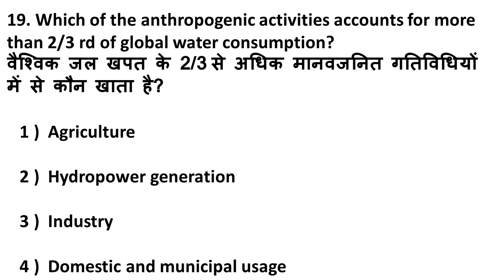Next question: which anthropogenic activity accounts for more than two-thirds of global water consumption? The answer is agriculture — it accounts for two-thirds of global water consumption.